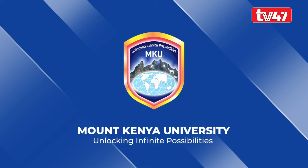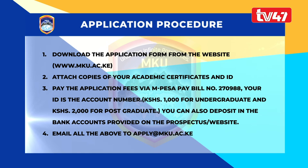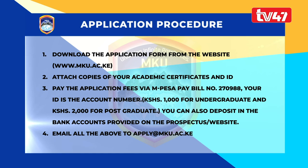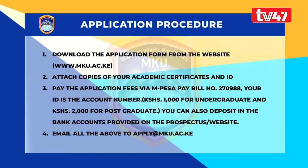To complete your online application: download the application form from www.mku.ac.ke, attach copies of your academic certificates and ID, and pay the application fee via M-PESA paybill number 270-988. Your ID is the account number. The charge is 2,000 shillings for postgraduate. You can also deposit via the bank accounts provided on the website, then email everything to apply@mku.ac.ke.